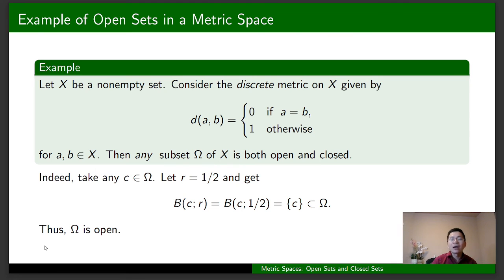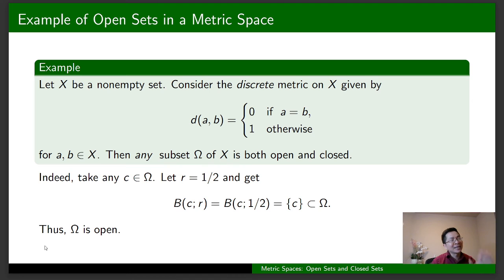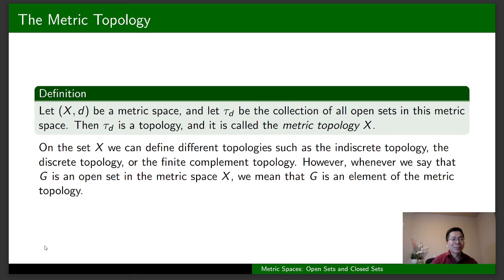So we have seen that any subset of X is both open and closed. Some people have confusion about the second part, but think about it: because any subset Omega of X is open, any subset of X is also closed.